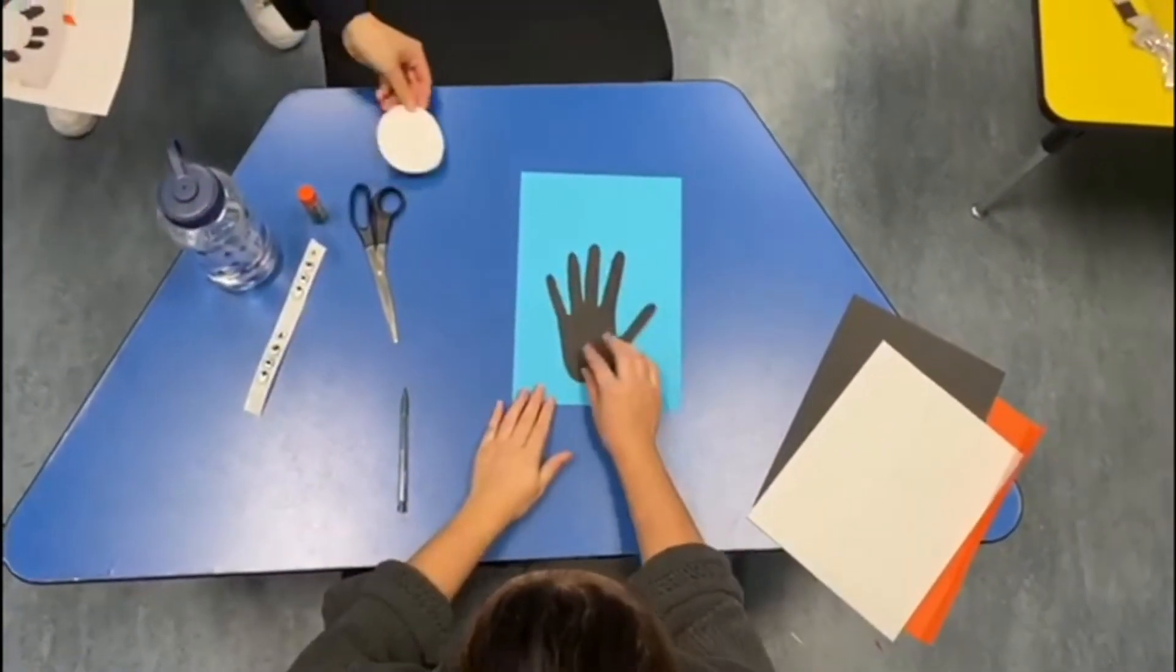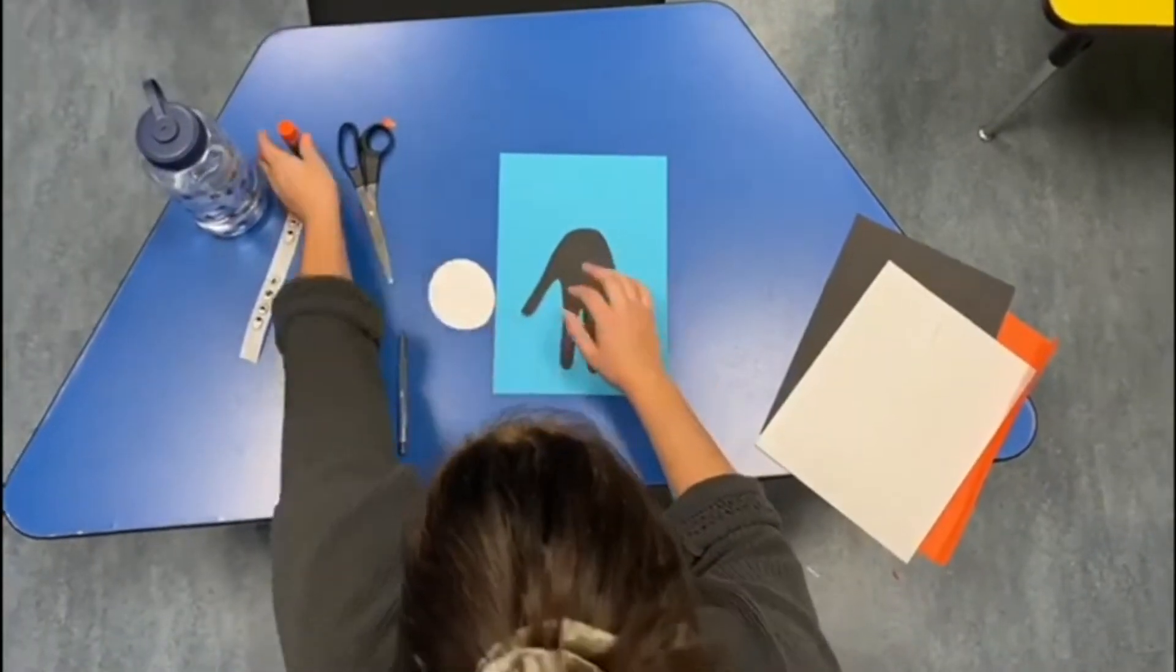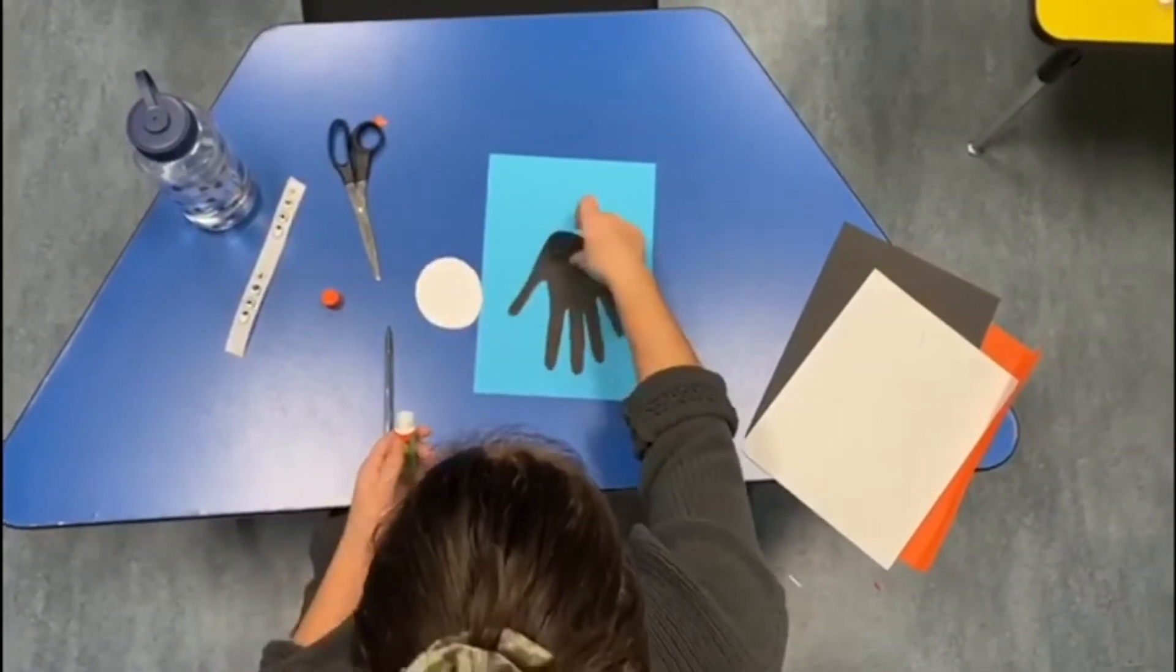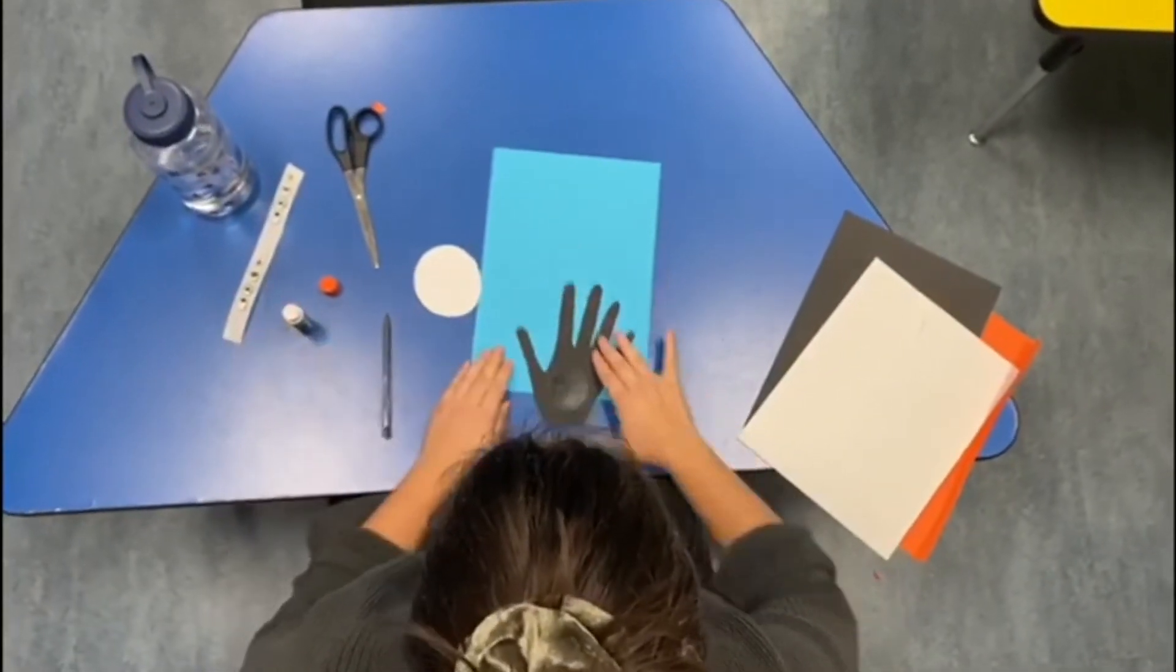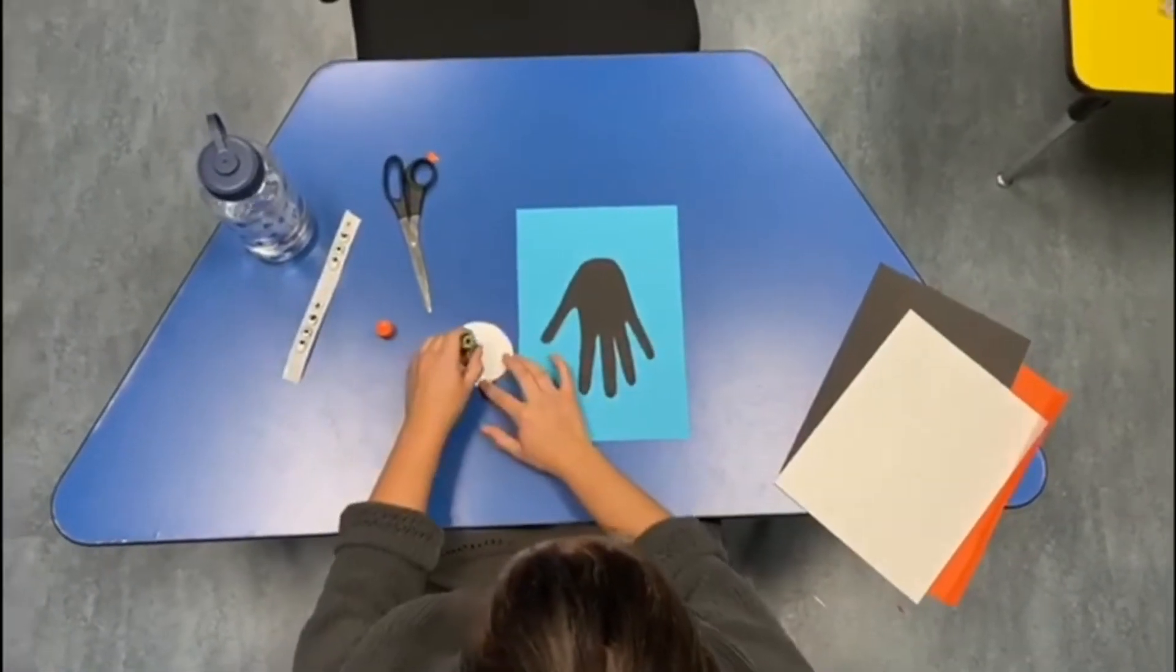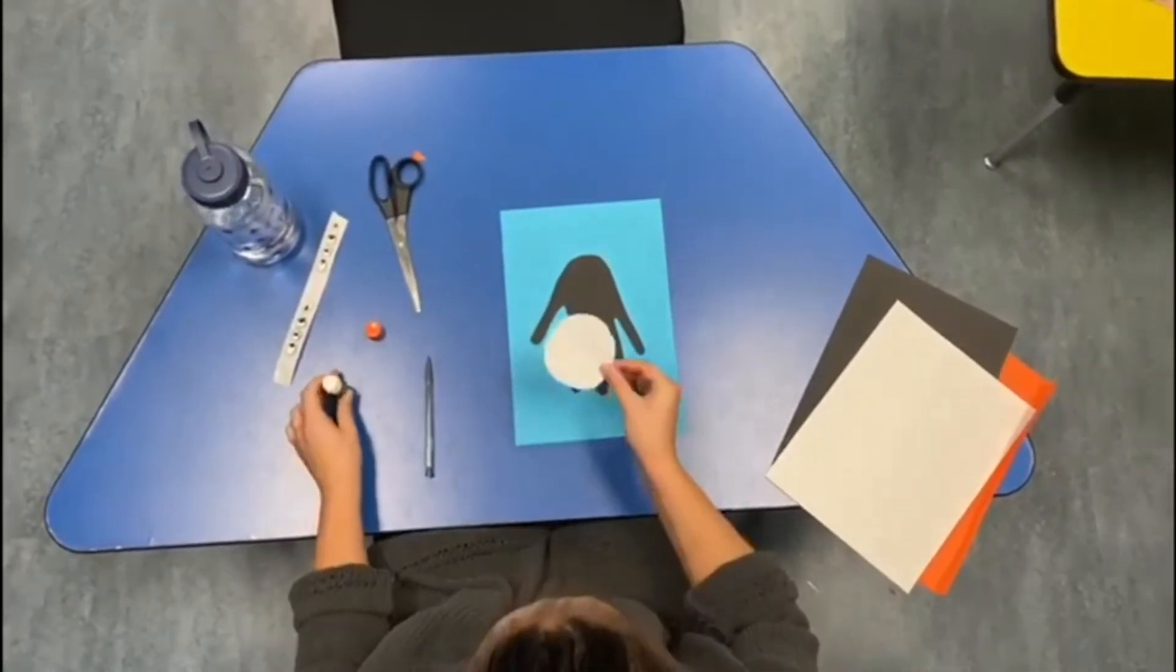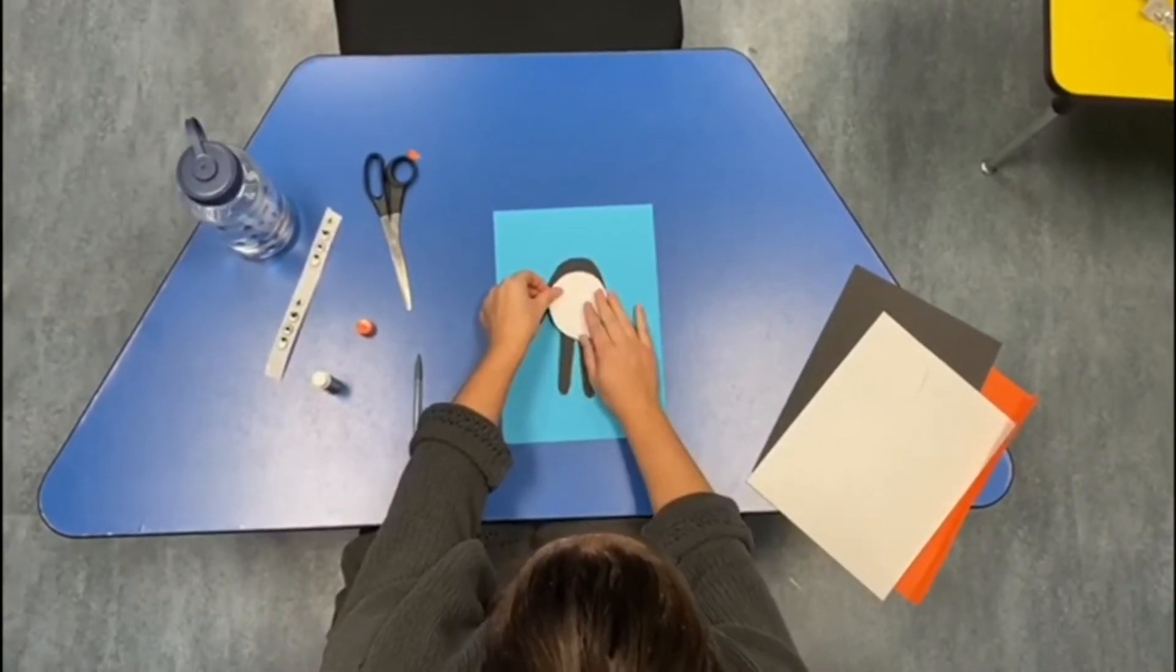Now we are going to place it on our piece of paper and you're going to put a little bit of glue at the back like so, and then you're going to do the same thing to your white belly and make sure you leave a little space at the top here for his head.